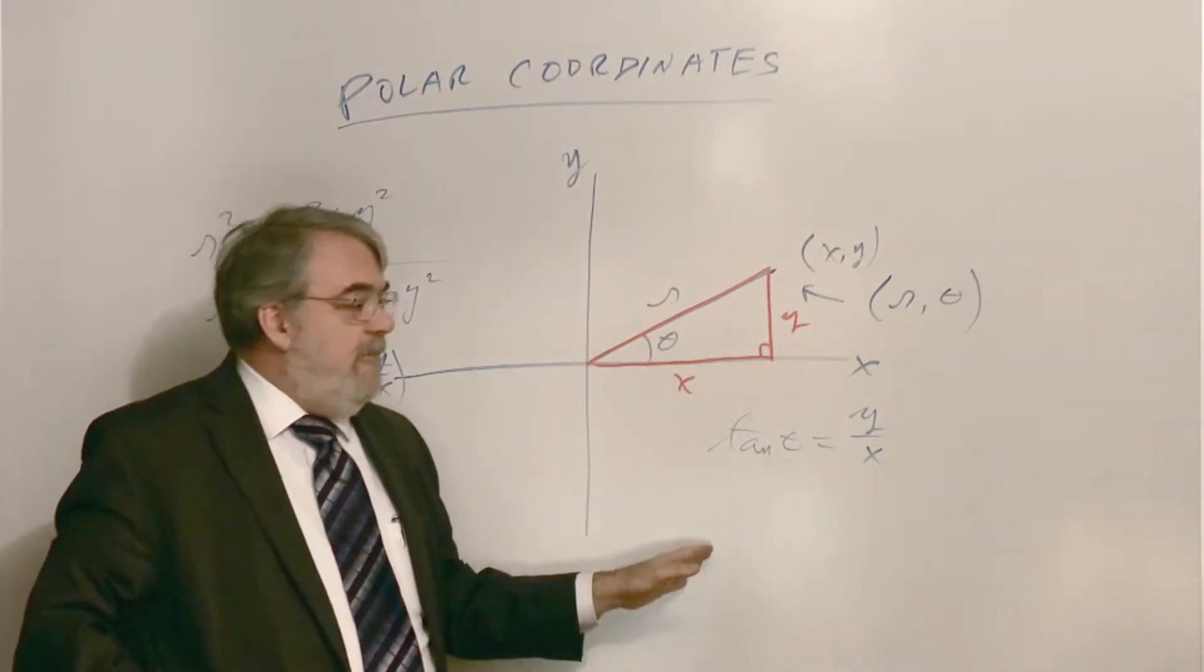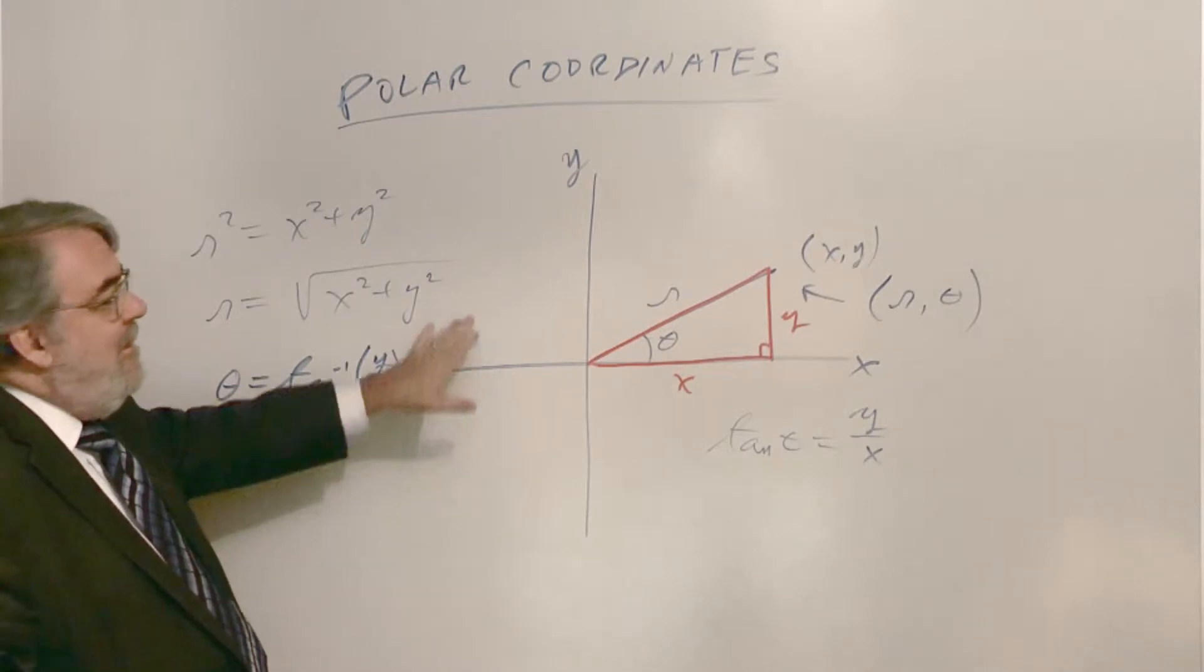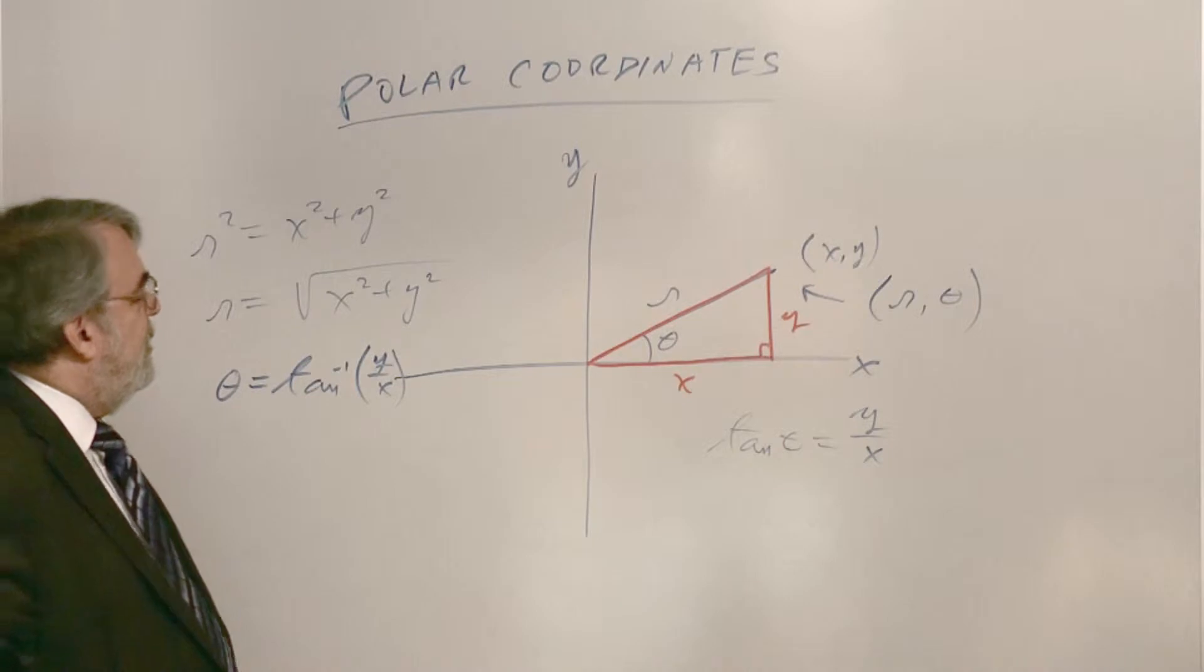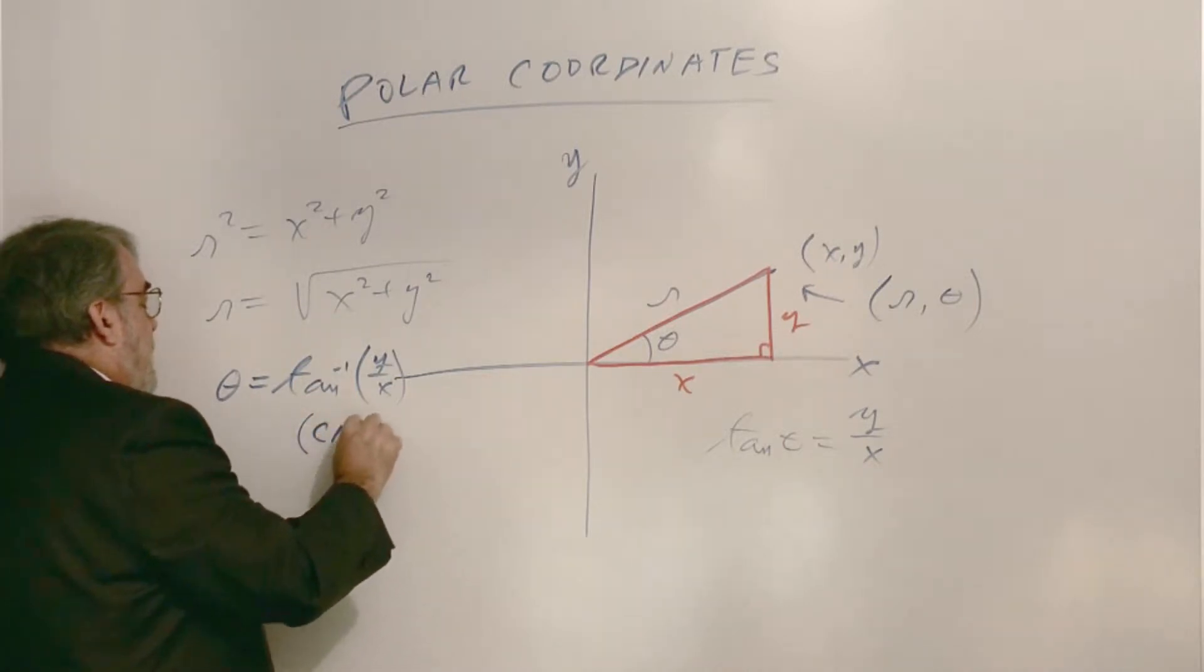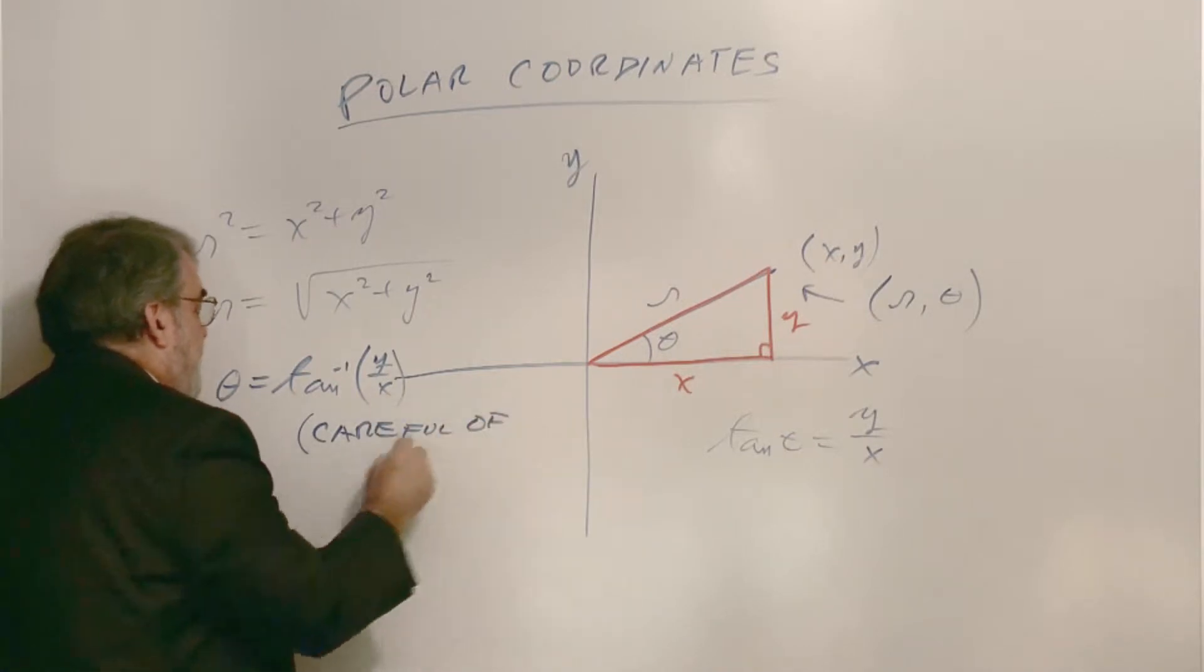But if you have a point over here in quadrant two and three, then we have to make an adjustment to theta. So we have to be careful of quadrants. Let's make that note here, and we'll see plenty of examples where we have to pay attention to this.